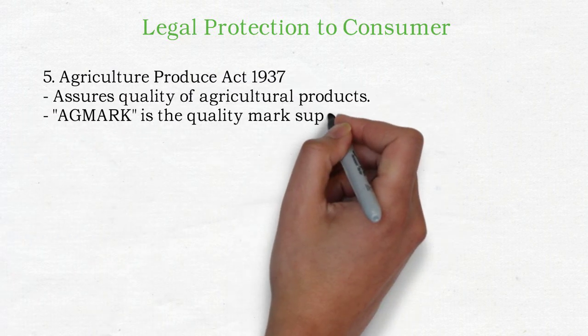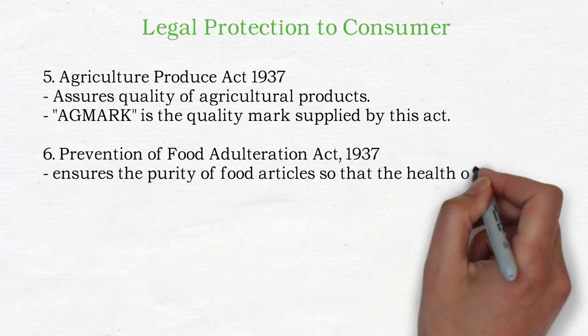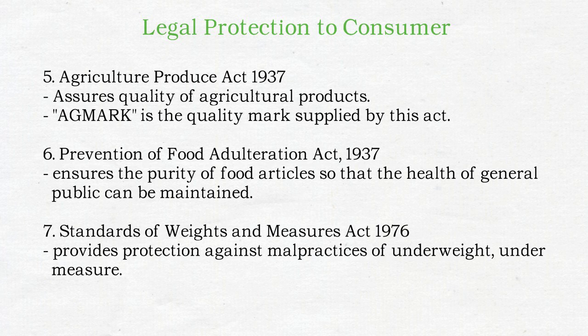Fifth act: Agriculture Produce Act 1937 — jitni bhi agriculture products hain unki proper quality honi chahiye, aur agar quality sahi hai toh us par AGMARK sticker laga diya jaata hai. Number six: Prevention of Food Adulteration Act 1954 — jitni bhi food articles hain woh pure hon, kisi bhi tarike ka adulteration na ho, aur general public ke liye healthy ho. Number seven: Standards of Weights and Measures Act 1976 — koi bhi malpractice nahi honi chahiye; agar packet mein 500 grams likha hai toh woh utna hi hona chahiye — underweight hone par is act ke under complaint kar sakte hain.